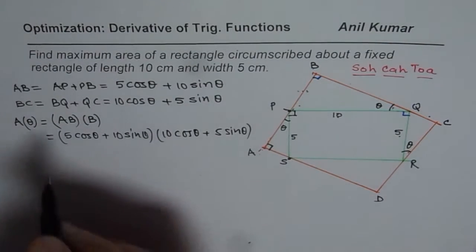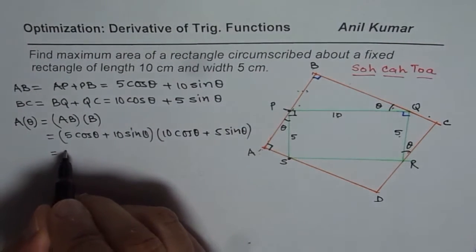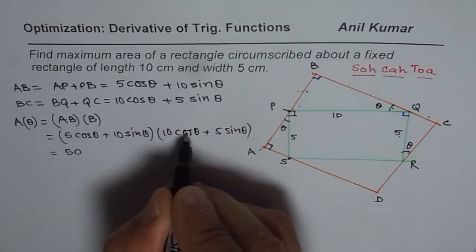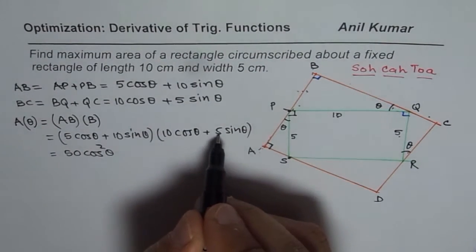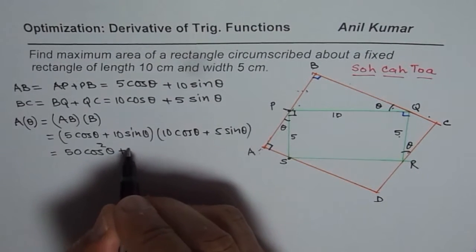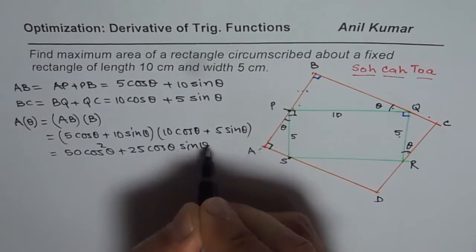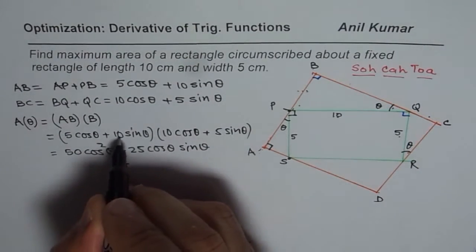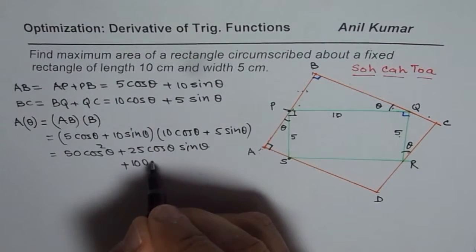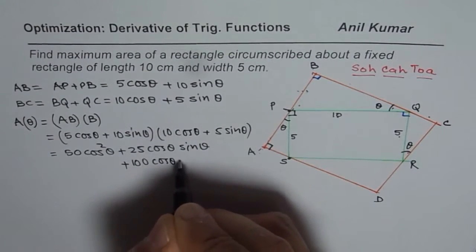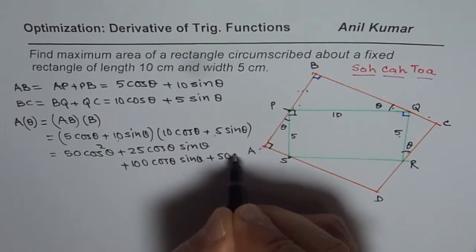We can multiply and simplify the expression. Area equals (5 cos theta plus 10 sin theta) times (10 cos theta plus 5 sin theta). Expanding: 5 cos theta times 10 gives 50 cos squared theta; 5 times 5 is 25 cos theta sin theta; 10 times 10 is 100 sin theta cos theta; and 10 times 5 is 50 sin squared theta.